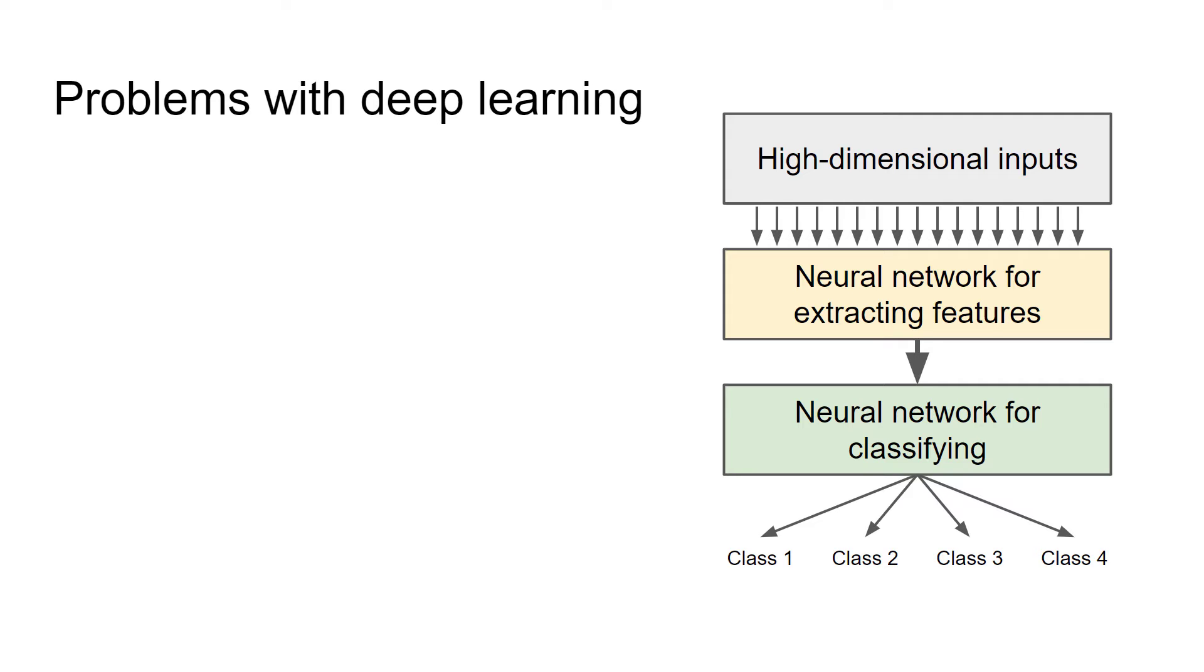However, there are two main problems with this approach. Here is an example of a deep learning model. We'll see something like this when we explore convolutional neural networks later in the course. These networks can take images, which consists of hundreds or thousands of pixels corresponding to hundreds or thousands of dimensions, figure out what features to look for in those images, and then classify the image based on those features.